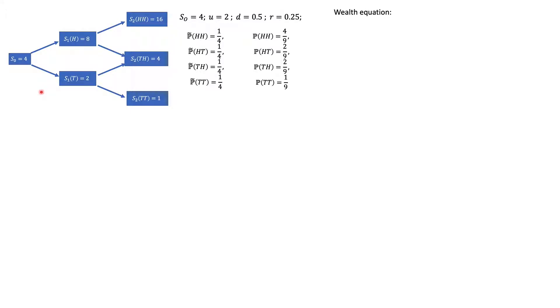We assume the real-world probabilities are given here. Our wealth equation is represented by this equation, which shows how the investor can invest between the asset (or stock) and the money market security. This is how the money market security evolves over time, and this is the value of the stock holding of the investor.